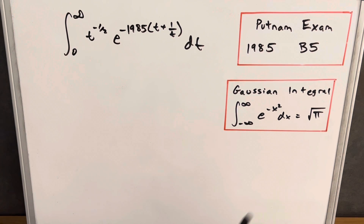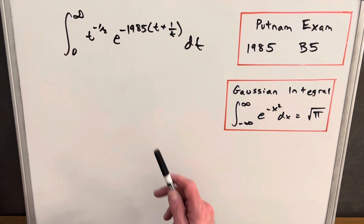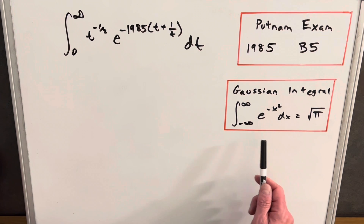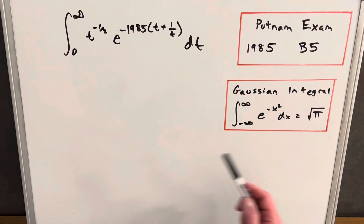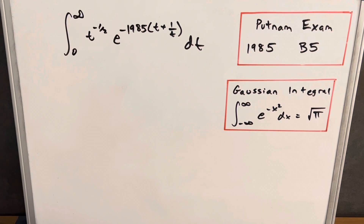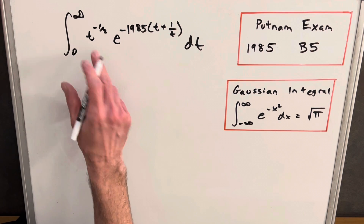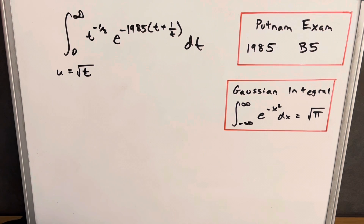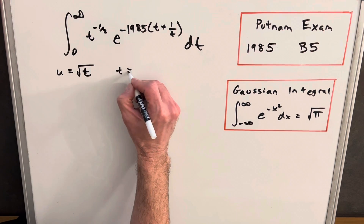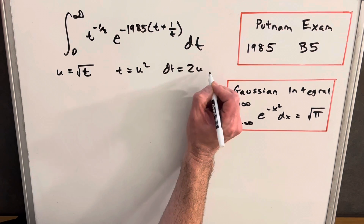Since they gave us this hint, I'm going to go for this approach. We'd like to get this in some form where we can use it — reduce the exponent to a square or a negative square, and then make use of our Gaussian integral formula. So my first step is a u-substitution to take care of this t to the minus one-half out front. We'll say u equals the square root of t, so t equals u squared and dt equals 2u du.